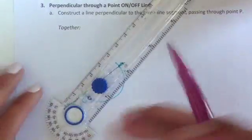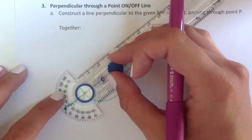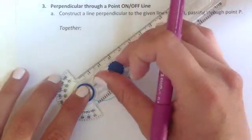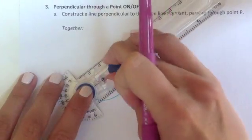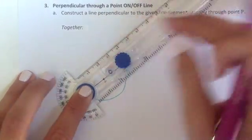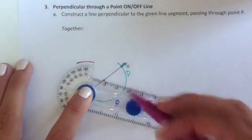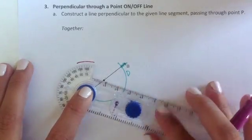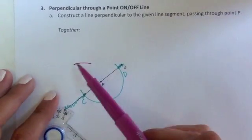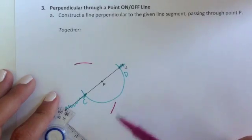Remember to do this, we need to put our center on one endpoint and open up the radius to more than halfway. Then I'm going to swing above and below. You'll notice here that this time I'm not doing a full arc. All I'm doing are these little baby arcs above and below, and it's perfectly acceptable to do it this way.